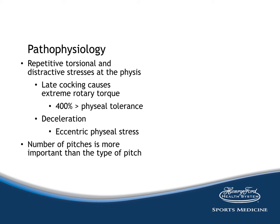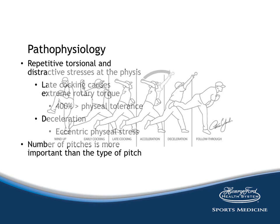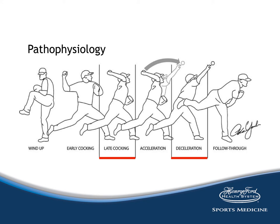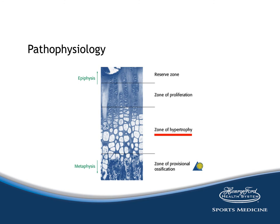The pathophysiology is repetitive torsional and distractive stresses at the physis leading to irritation. This typically occurs during the late cocking phase, which causes extreme rotary torque 400% greater than the physeal tolerance, and during the deceleration phase where eccentric physeal stress occurs. The number of pitches appears to be more important than the type of pitch. The phases of pitching include wind-up, early cocking, late cocking, acceleration, deceleration, and follow-through — it is the late cocking and deceleration phases that most typically put the physis at risk. Going back to physiology and bone maturation, the zone of hypertrophy — the area of reduced blood flow — is the area where the irritation most commonly occurs.